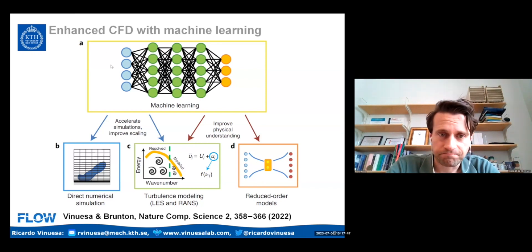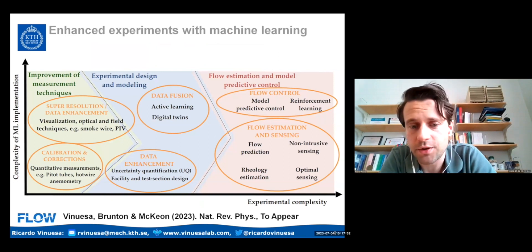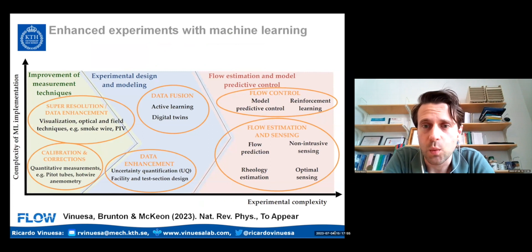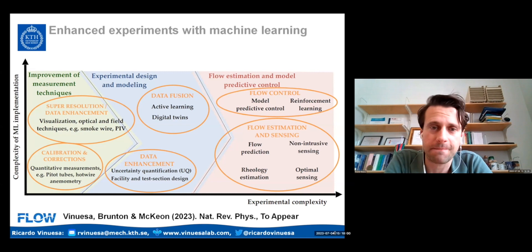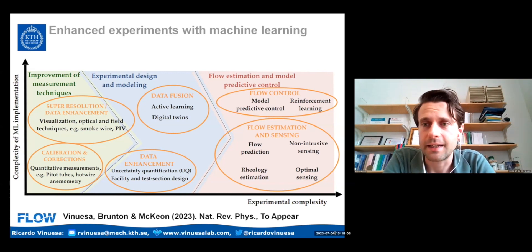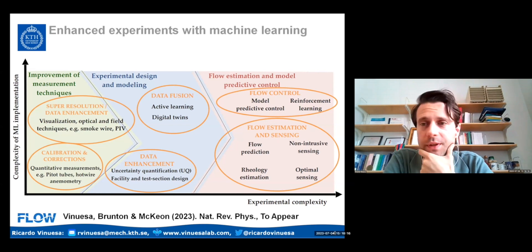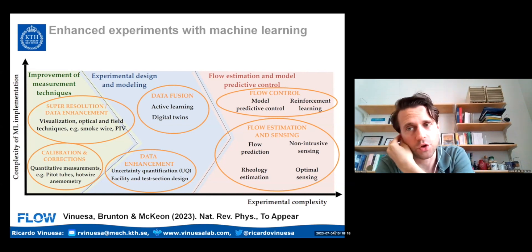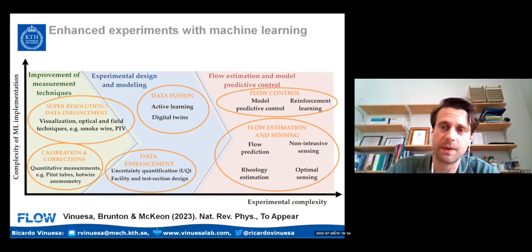More recently, we have another review paper with Steve and with Beverly McKeon, to appear in Nature Review Physics, where we look at machine learning and experiments. We highlight that machine learning can help in the context of measurement techniques, experimental design, and in the context of flow estimation and model predictive control. We've shown through different studies that there is potential for machine learning and fluid mechanics.